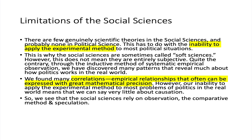Let's talk about the limitations of social sciences. There are few genuinely scientific theories in the social sciences, and probably none in political science per se. This has to do with our inability to apply the experimental method to most political situations. This is why the social sciences are sometimes called soft sciences, and why some people deny that they are sciences at all. However, this does not mean that they are entirely subjective — through systematic empirical observation, we can say very little about causation.